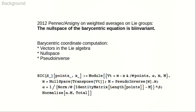Our construction of bi-invariant generalized barycentric coordinates makes use of the results on weighted averages on Lie groups by Penec and Arsini. Barycentric coordinates are an inverse of the weighted average. The evaluation of coordinates that we propose requires the computation of tangent vectors, as well as the null space of a matrix and its pseudoinverse.